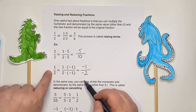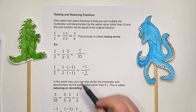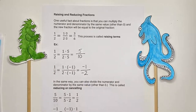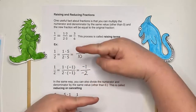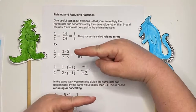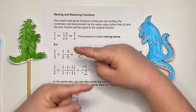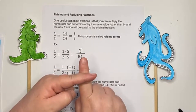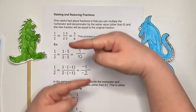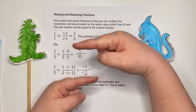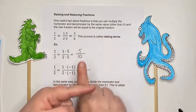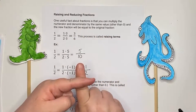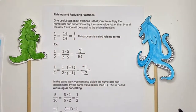So negative one over negative two is equal to positive one over positive two. If I have two minus signs — one on top and one on bottom — they simplify to a plus. As long as you have a minus on the top and the bottom, it simplifies to a plus, which is going to be really convenient later on.